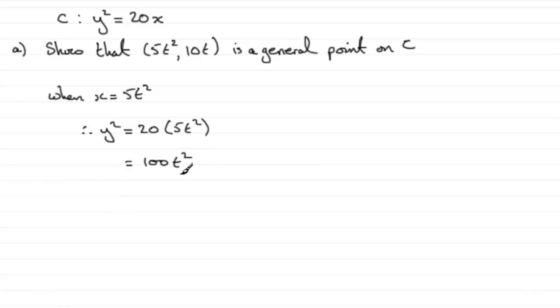And so if that's y squared equals 100t squared, all I need to do is take the square root of this and I get y equals 10t, which is what we wanted. You could argue that it would be plus or minus, but I only need to show this particular value, so I'm just going for the 10t.